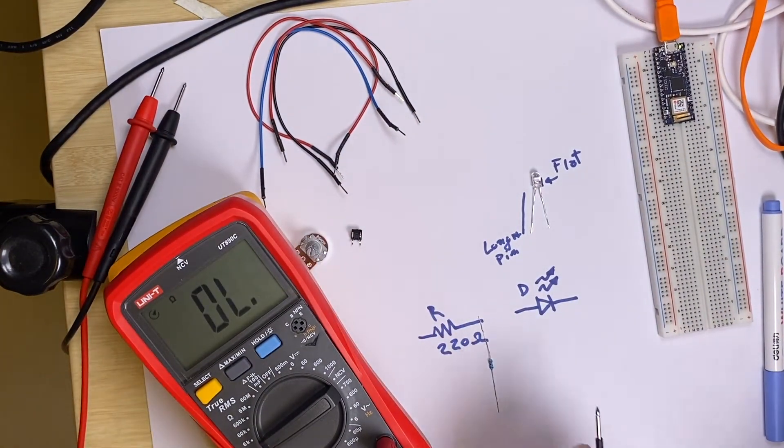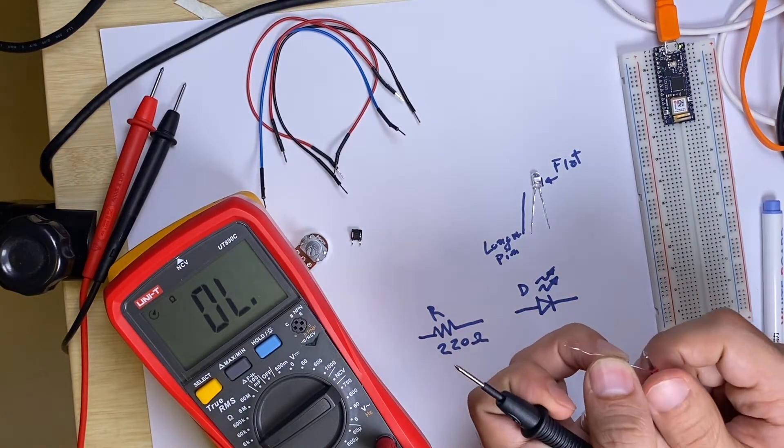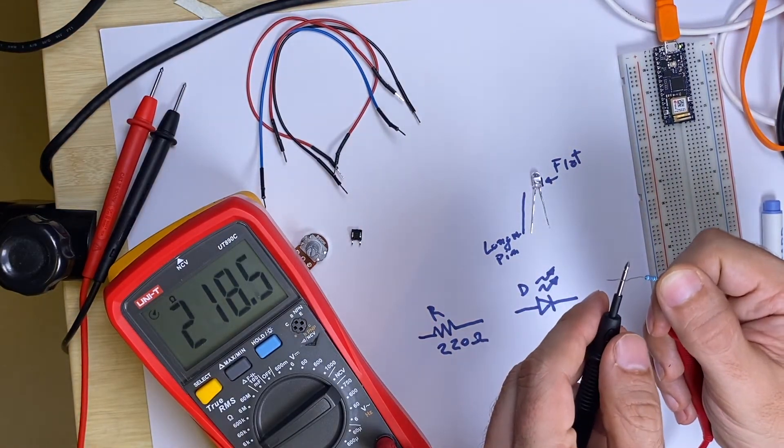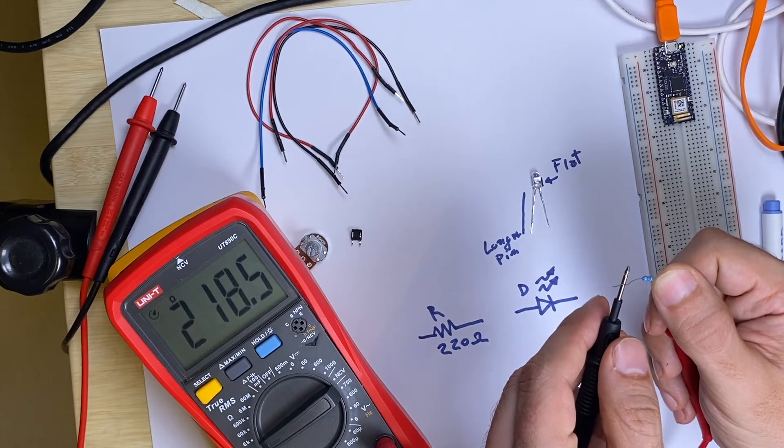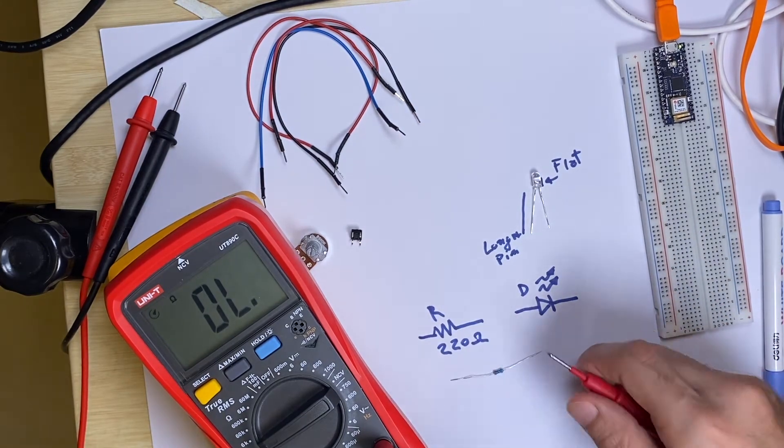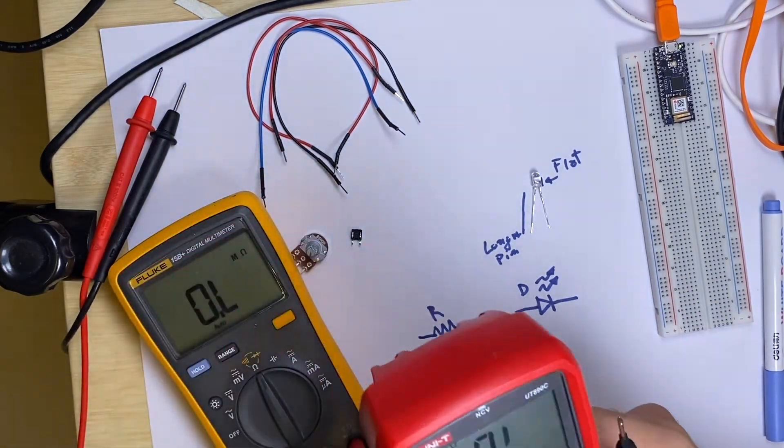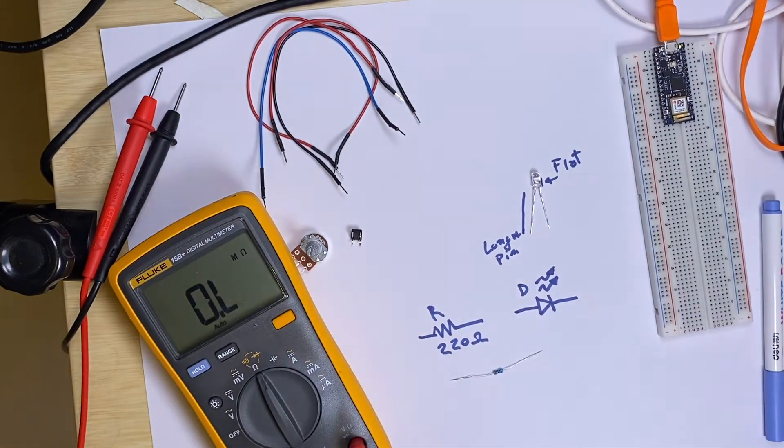If I choose another value it doesn't matter, but I will not be able to see their value. When I'm not touching anything, this displays OL for over limit. Now I connect it correctly and it shows 218, very close to 220 ohms.